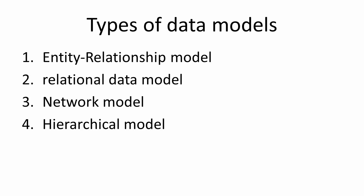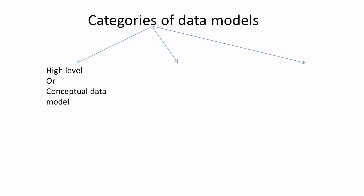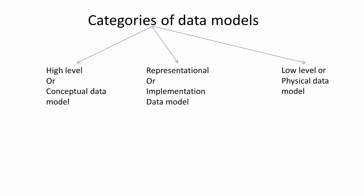I don't want you to get confused between types and categories, so I'm explaining it in detail. Looking at this diagram, we have three categories: high level or conceptual data model, representational or implementation data model, and low level or physical data model. In each category we have different types of data models.